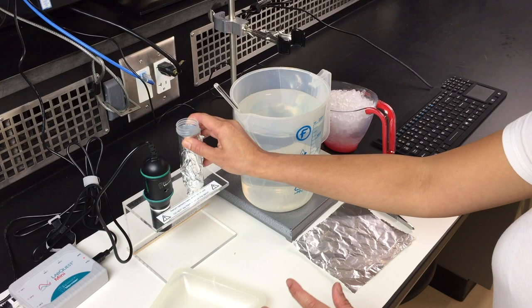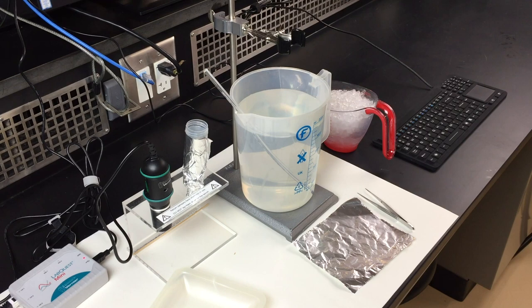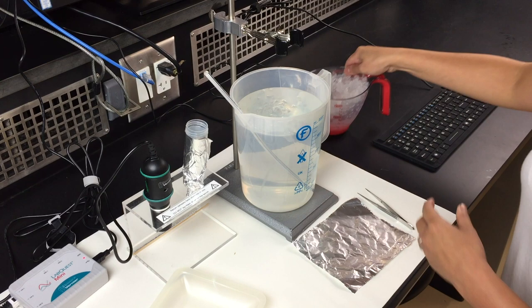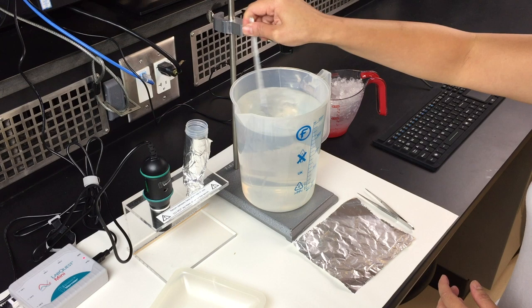For the first temperature, it will be at 20 degrees. Get the tap water to fill in about 1.5 liters in your jug for the water bath. Add some ice into your water bath to bring the temperature down to 20 degrees.